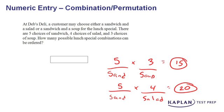At this point we know there are fifteen lunch options with a sandwich and soup, and twenty options with a sandwich and salad. So the total number of lunch combination options will be fifteen plus twenty, which is thirty-five.